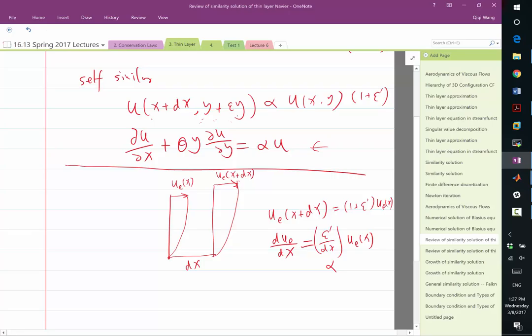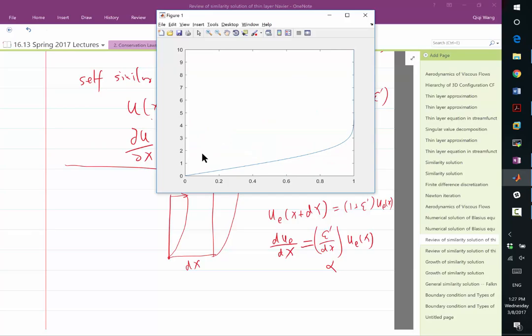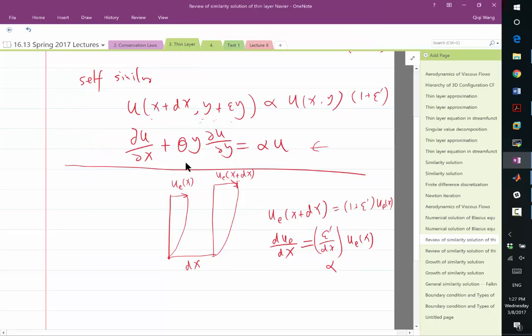Another thing is, how does the y similarity change as the solution grows? So again, let's take a look at the velocity profile we get. The velocity profile is the same for x and x plus dx, but the location of eta equal to 1 has to change. So if eta equal to 1 is here, then eta equal to 1 is going to be a slightly shifted position in y.